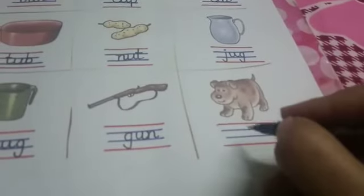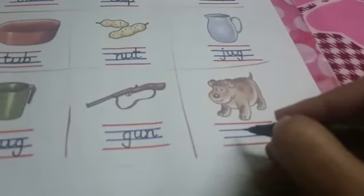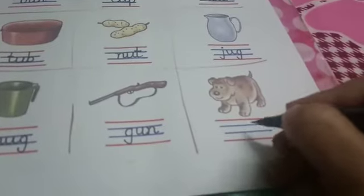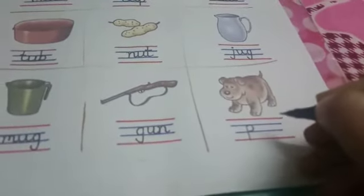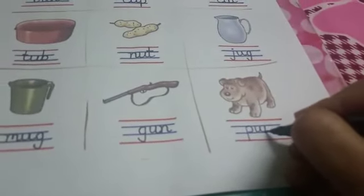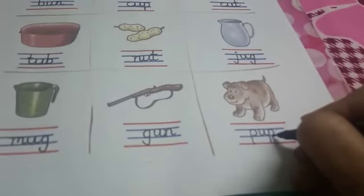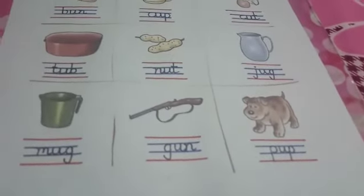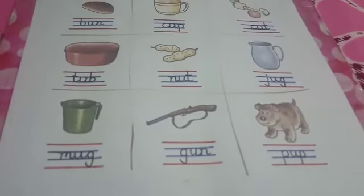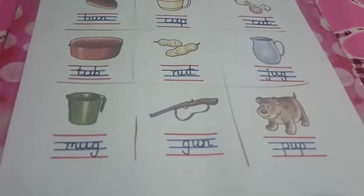And here is a very beautiful sweet little pup. Let's write down 'pup'. The tail of 'u' will join — pup. Children, you will also write down the names and send it to me. Thank you. Bye!